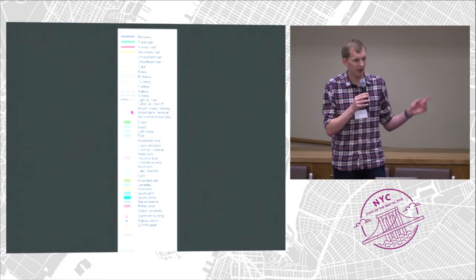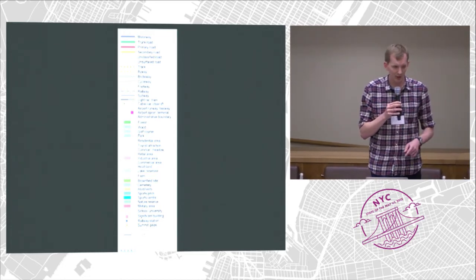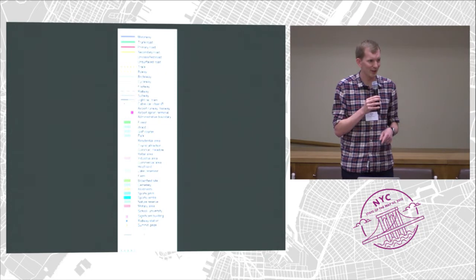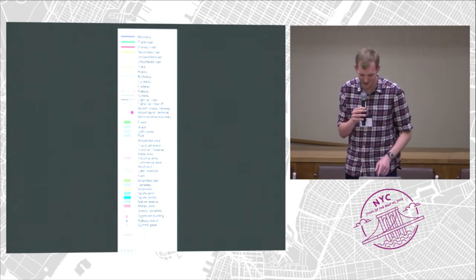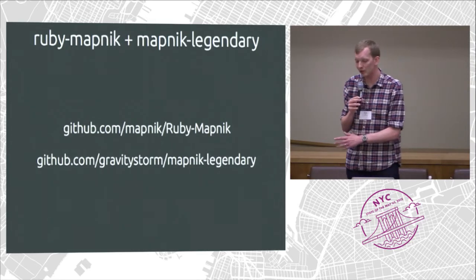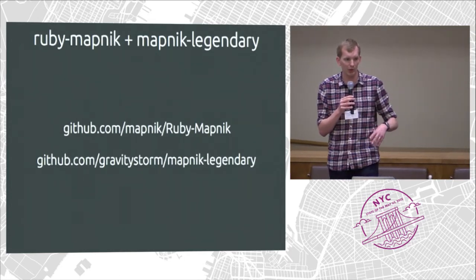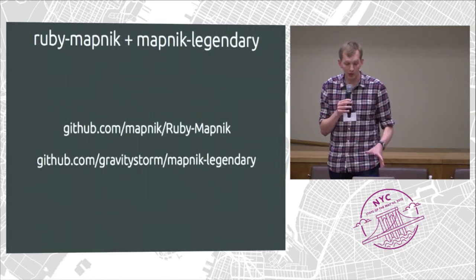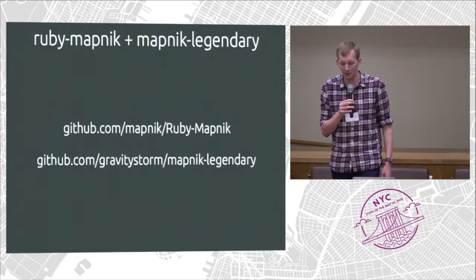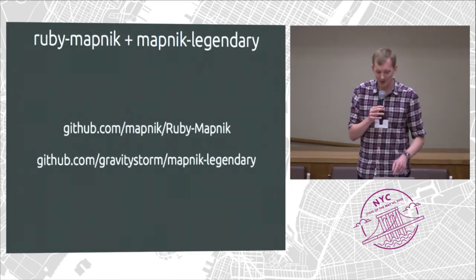The second future item is the map key. If you press the map key button on OpenStreetMap you get to see what everything on the map means. This key was last substantially updated in 2009 — six years ago — and we're making 650 changes a year without updating it, so we need to sort that out. I have a plan: I've written a piece of software called Mapnik Legendary, which takes Mapnik style sheets and generates legend files from them. I already use it for five other projects but it needs more development to handle the complexity of the main OpenStreetMap style sheet. The hack day on Monday has been mentioned — if you're interested in this, come and talk to me.